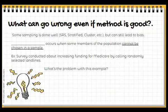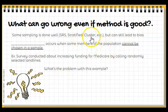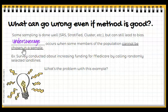Even if a sampler has done the work correctly — using a stratified, clustered, or simple random sample — there can still be bias. You can never completely eliminate bias. One issue that can occur even when the methodology is good is called under coverage, which occurs when some members of the population simply cannot be chosen in a sample — they just don't receive the survey.